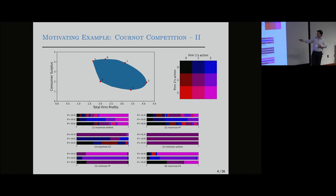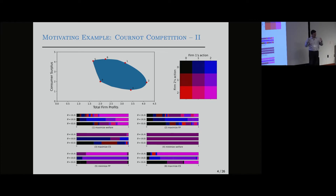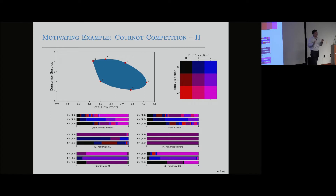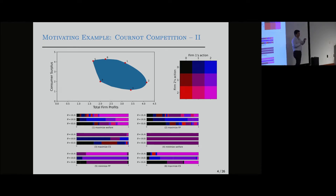In this plot, the x-axis has total firm profits and the y-axis has consumer surplus. This blue region is the region of tuples of consumer surplus and firm profits that can be achieved using some mechanism, some information structure. I highlighted six points: those that maximize total welfare, total firm profits, consumer surplus, and those other extremal points are where these quantities are minimized. What you see are the mechanisms that actually achieve these extremal points.